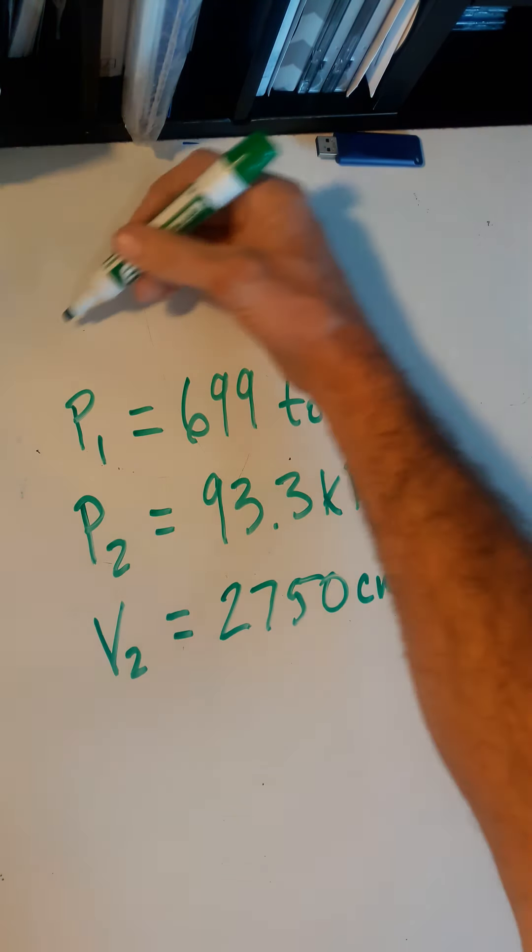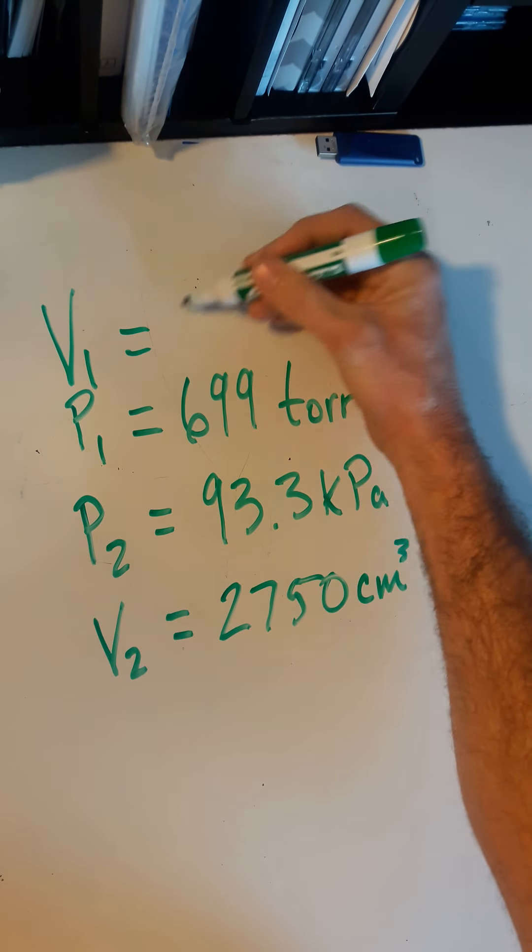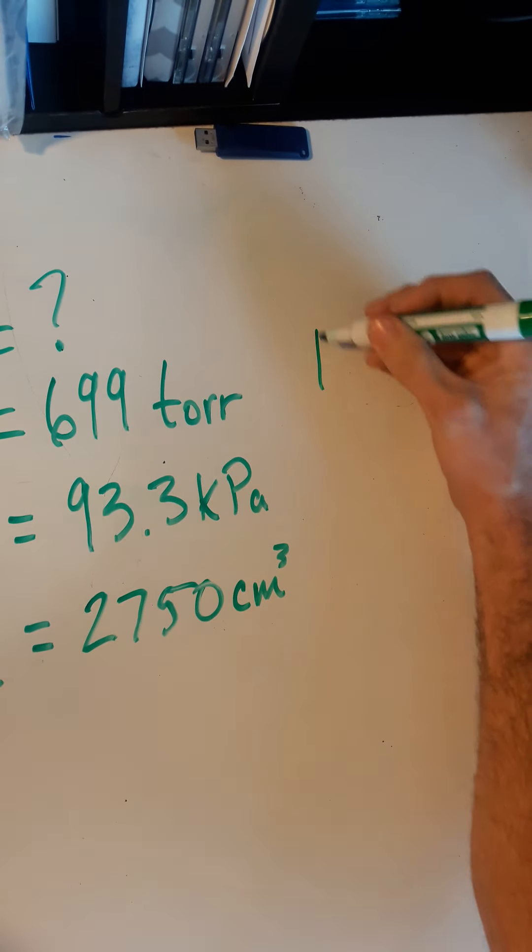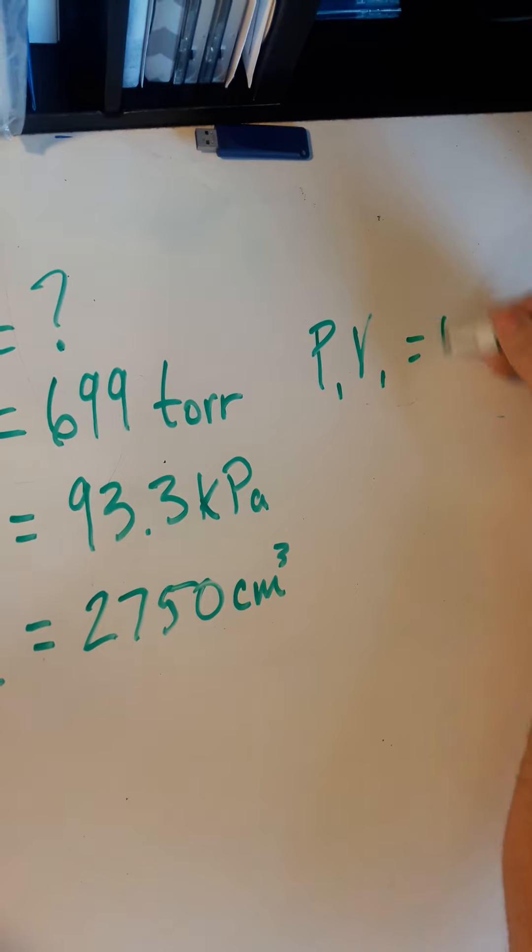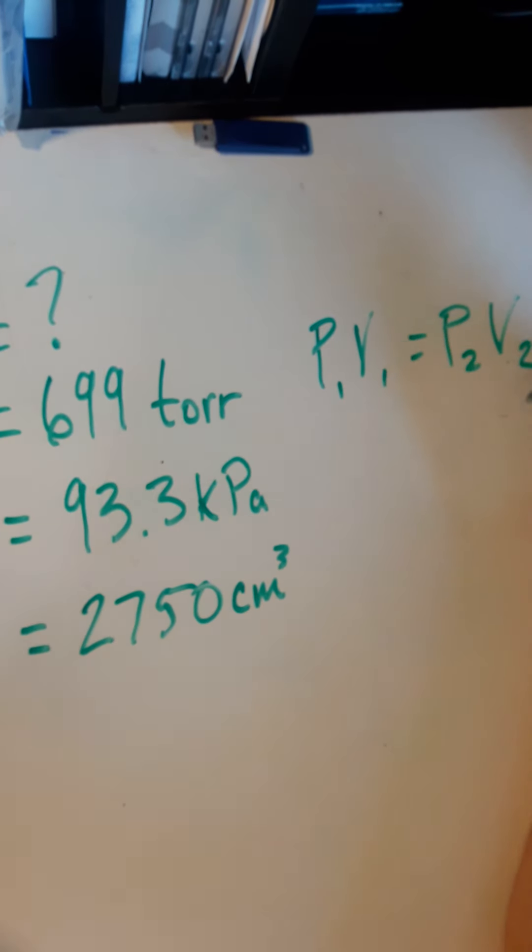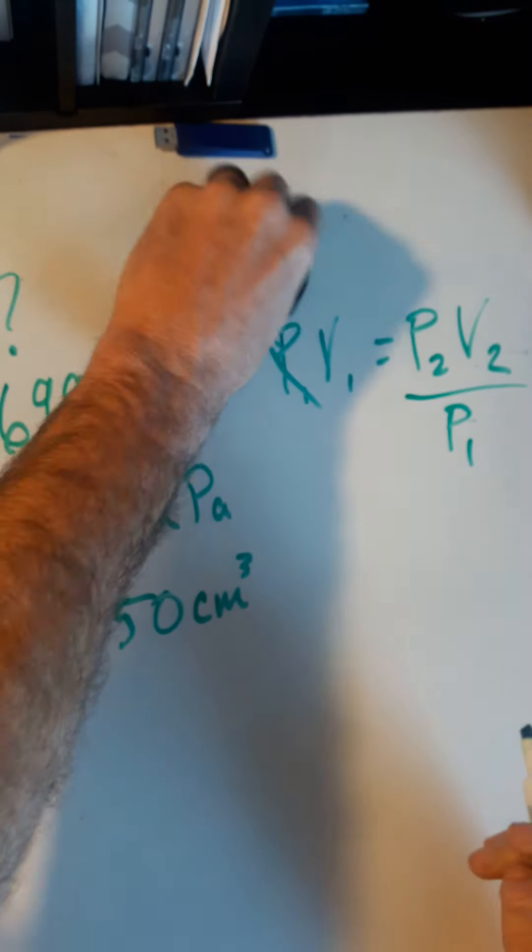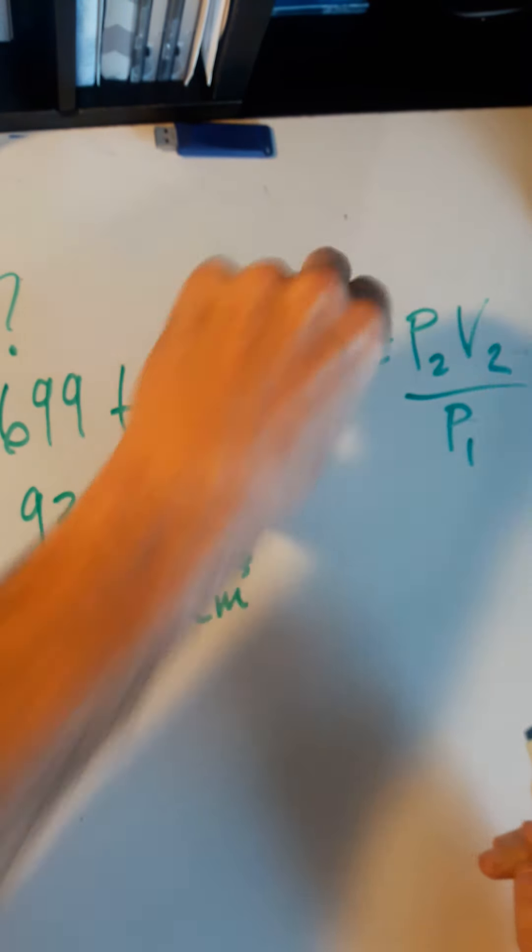And I'm looking for V1. So of course, the equation would be P1V1 equals P2V2. If I'm looking for V1, then I can divide both sides by P1 to cancel it here. So there's your relationship.